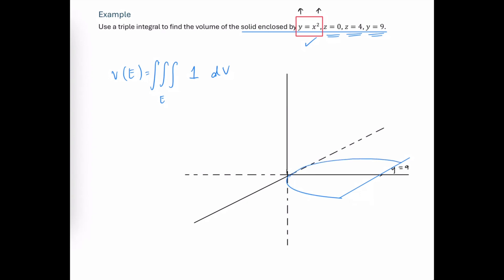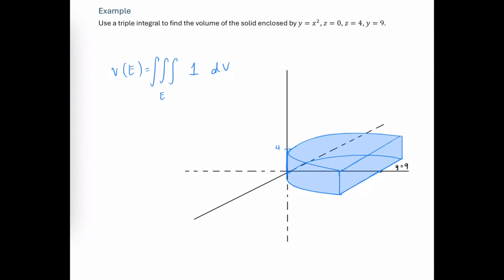And that y equals nine plane essentially chops off that parabola, preventing it from going any farther. And since our parabolic cylinder extends in the direction of z all the way up to the z value four, we end up with this portion of our parabolic cylinder.